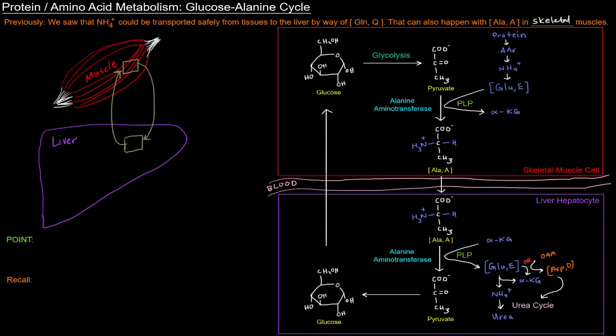The point is that we're basically getting the nitrogens that are the products of breaking down proteins in the muscles out into the liver. So we're taking these out through the blood and to the liver so that they can eventually be excreted safely as urea.